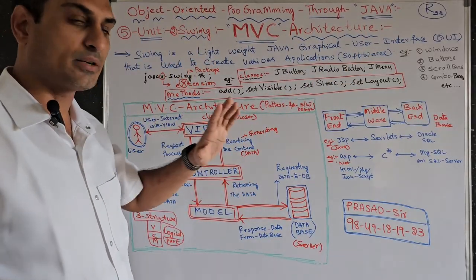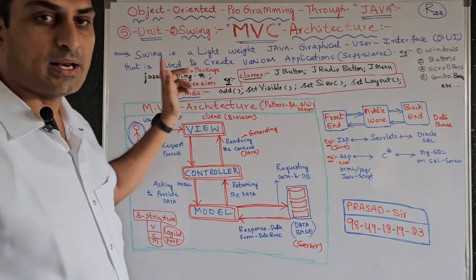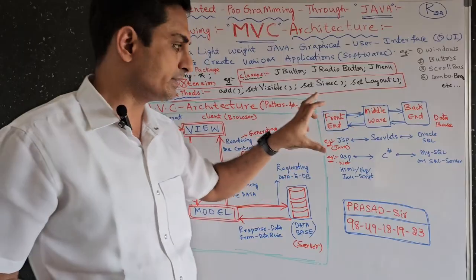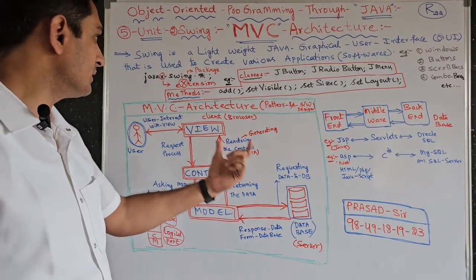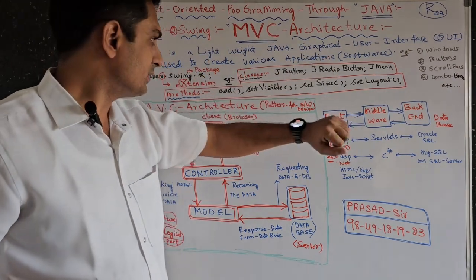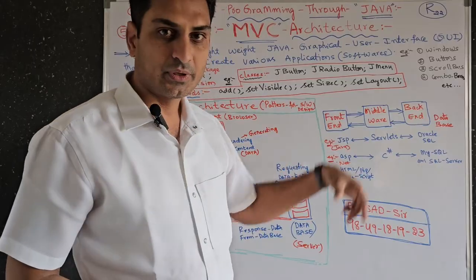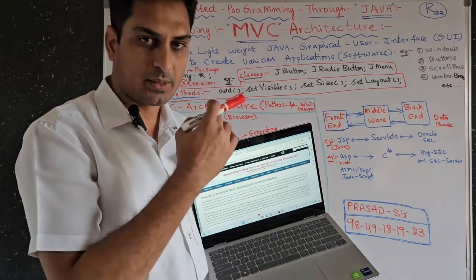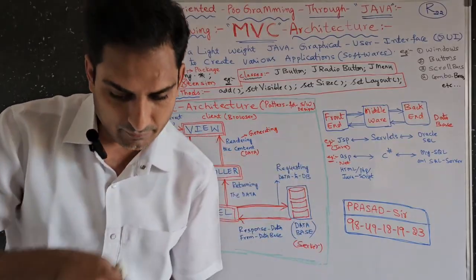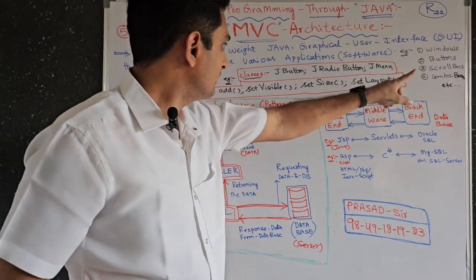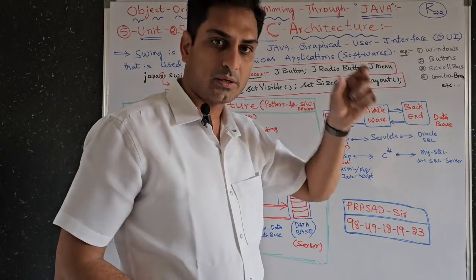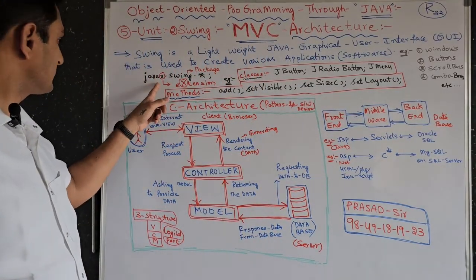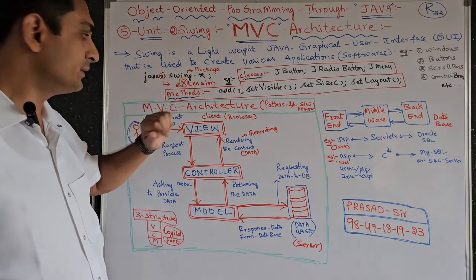From the fifth unit you will get direct questions. The second chapter is Swings. Swing is a lightweight Java application used for graphical user interface (GUI). In the window you will have the application, used to create application software — for example, a window on the desktop like Gmail or a JNT website with username, password fields, and tabs. In that software we create buttons, scroll bars (vertical and horizontal), combo boxes, etc. For that we use the javax.swing package — 'x' stands for extension.